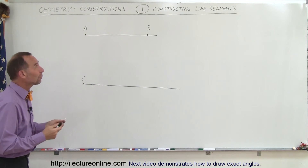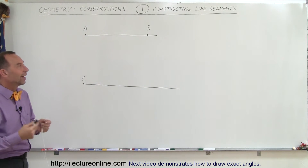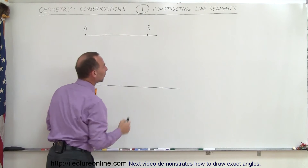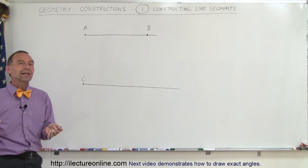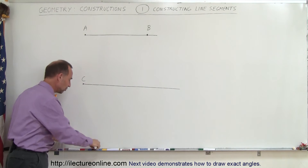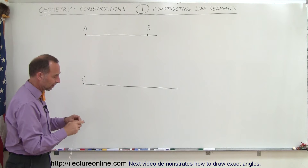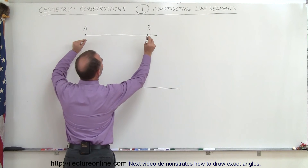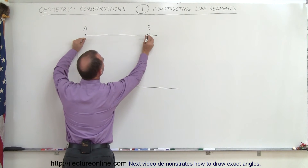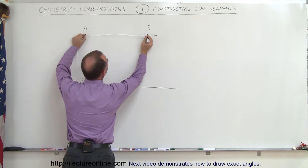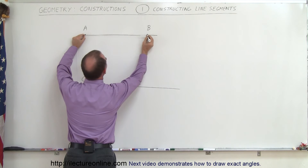Let's go ahead and start with the first one. We're going to learn how to construct a line segment. Here we have a line segment from A to B, and we want to draw another line segment that is congruent — meaning it has the exact same length. I put my pen right at point B, and I put the end of the string right at point A. So now I have the exact length.